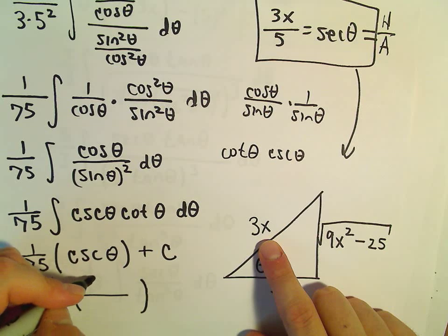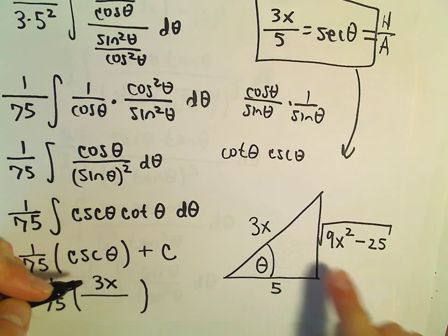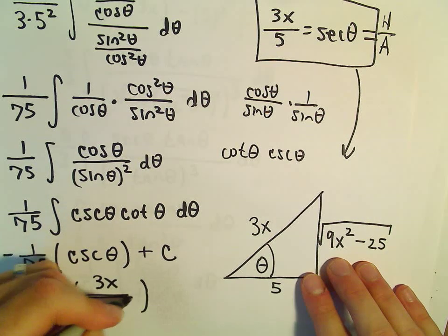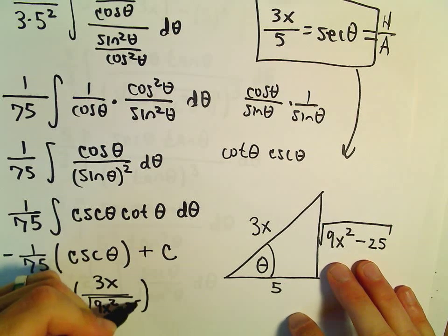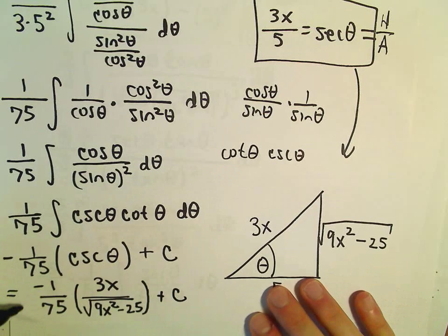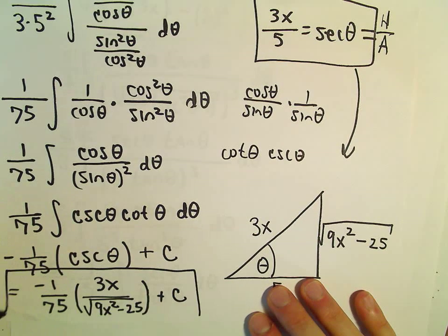So let's see. The hypotenuse is 3x. The opposite side would be the square root of 9x squared minus 25 plus c. And that is now our anti-derivative.